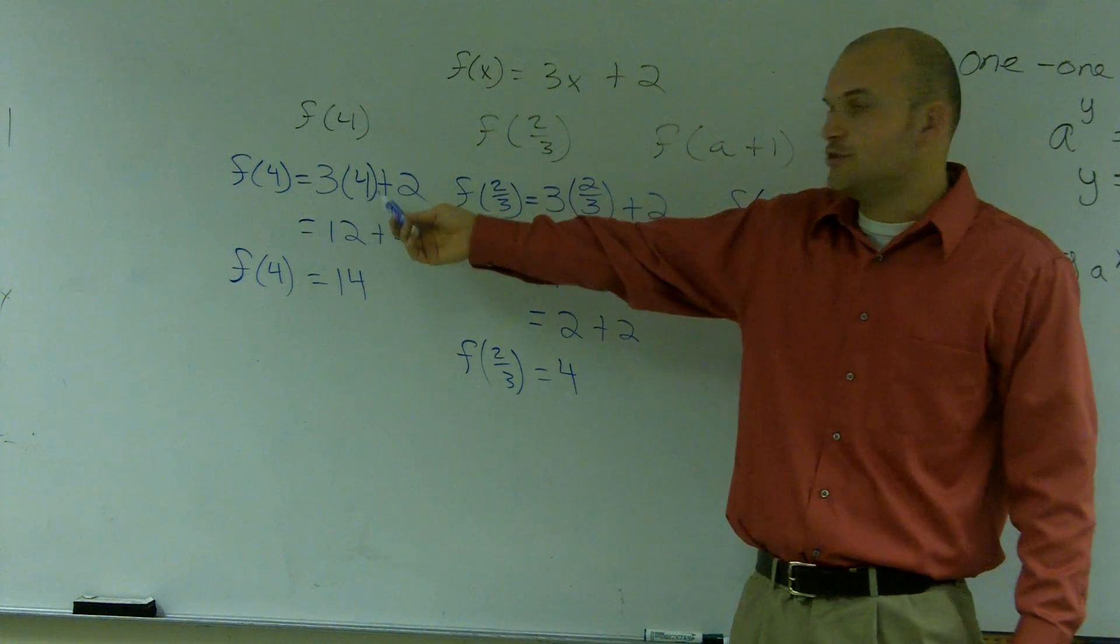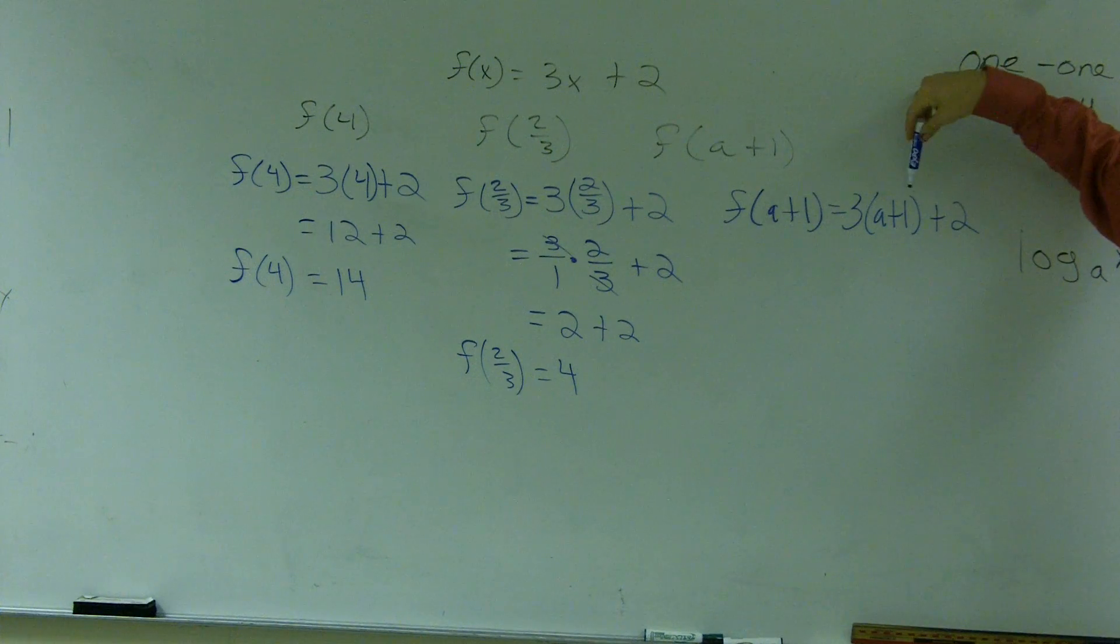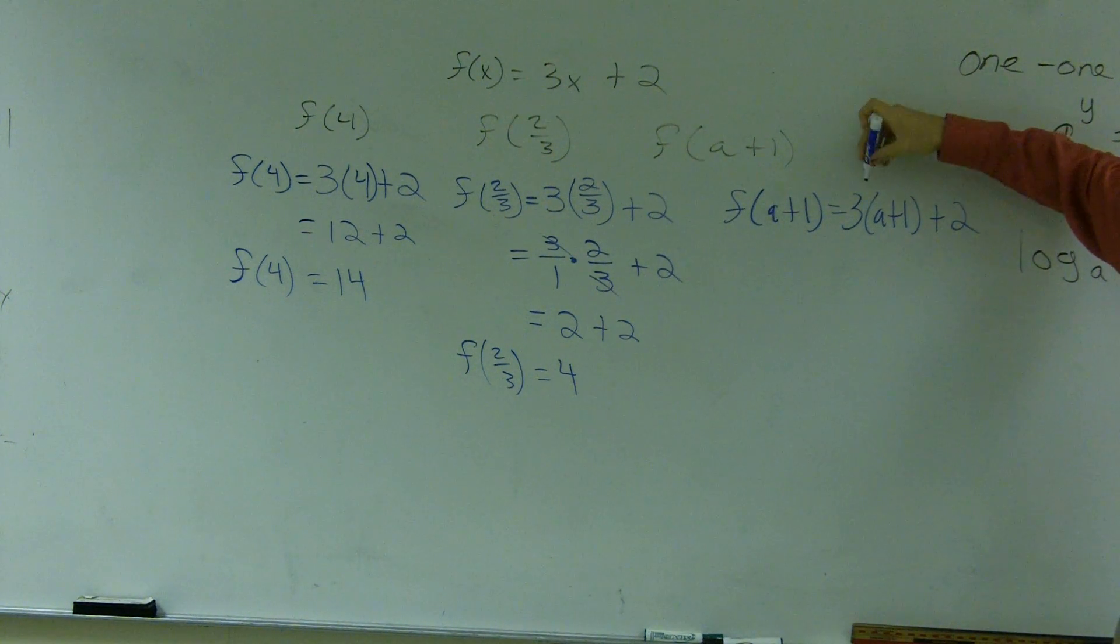It was easy when it was one number, right? You multiply 3 times 4. Well, what do you do when you multiply 3 times a binomial? A term with, or in parentheses, two terms. You multiply the 3 times a and the 3 times the 1.